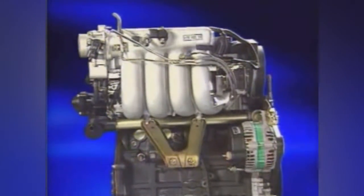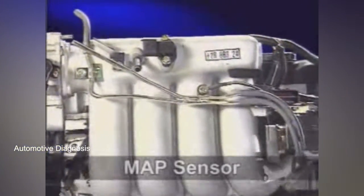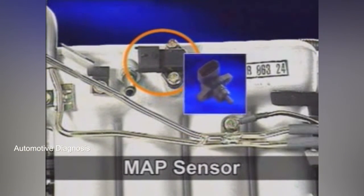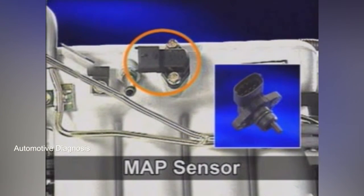The manifold absolute pressure sensor is installed on the surge tank. It detects intake manifold pressure and sends it to the ECM. The ECM calculates the air intake quantity and controls fuel injection amount.